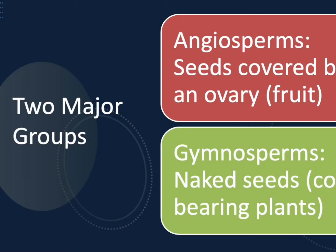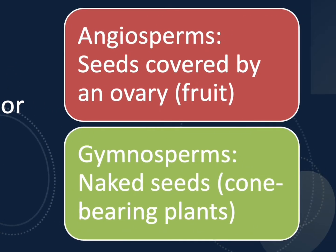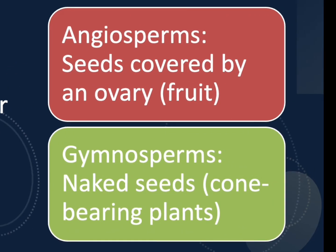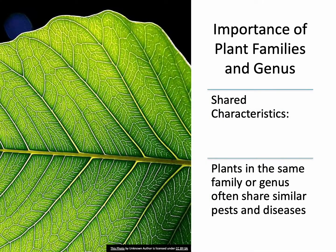The two big plant groups are angiosperms and gymnosperms. Angiosperms have seeds covered by an ovary, which is usually a fruit. Gymnosperms are different — they're like naked seed plants, like pines or firs, and they have their seeds in cones instead of fruits. Plants in the same family or genus often share similar problems. If you know a tree family, you've already got a head start on knowing what pests or diseases might affect it.